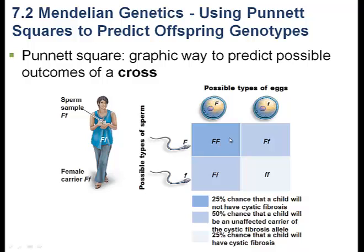However, if a mutated egg — which doesn't hurt the egg itself but will affect the offspring — meets a normal sperm, then the offspring is heterozygous. The same applies if a normal egg meets a mutated sperm. So 50% of offspring are expected to be carriers, as you can produce a carrier either way. This box represents 25%, and that box represents 25%, totaling 50%. In the last box, when a mutated egg meets a mutated sperm, that individual unfortunately has cystic fibrosis.